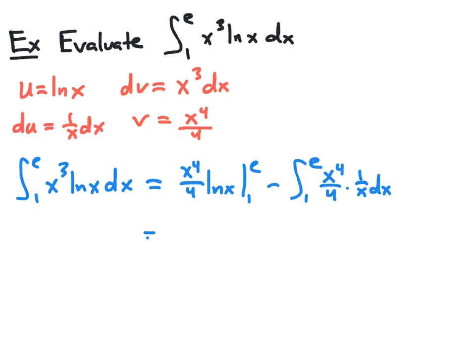And of course, we can simplify this integral a bit. We can bring out the constant of 1 4th. And x to the 4th times 1 over x simplifies to be just simply x cubed. And so our definite integral that we started with is going to be x to the 4th over 4 natural log x evaluated from 1 to e, minus 1 4th the integral from 1 to e of x cubed dx.